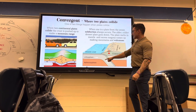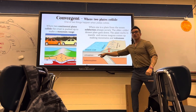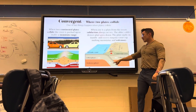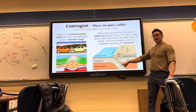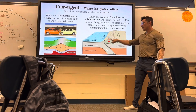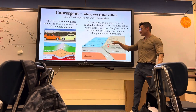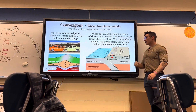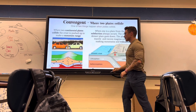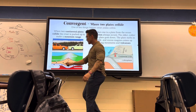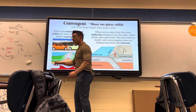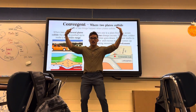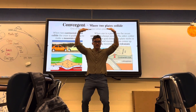When the ocean plate goes underneath at a convergent boundary, it often makes volcanoes right above it. That's usually where volcanoes are made - right where the ocean plate goes underneath. Any questions about the ones that smash together?